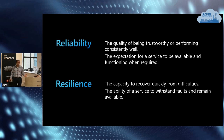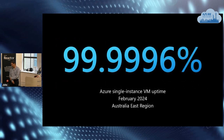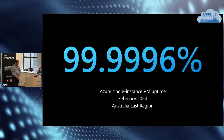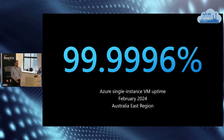Everyone talks about uptime figures, and here is ours: single instance VM uptime in Australia East — Sydney. What's the downtime equivalent in minutes? There's a website, uptime.is. It's two minutes a year — that's what that SLA means. That's our uptime figure, though be mindful there's a difference in how we define uptime month to month.